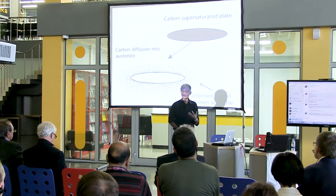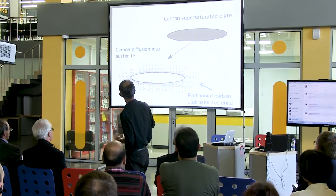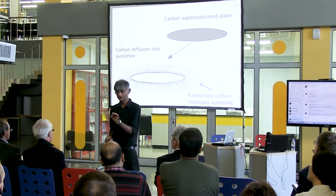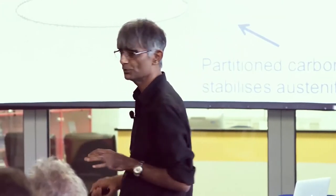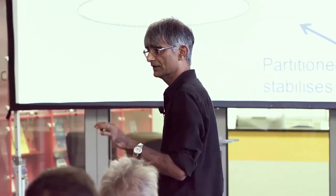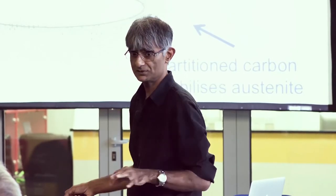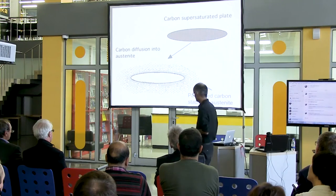If I summarize about 40 years of work, this is the mechanism of the bainite transformation. You form a plate exactly like martensite without any diffusion. But carbon is a small atom, and it sits inside the holes in the crystal structure. Shortly after transformation, it can escape into the remaining austenite. Carbon stabilizes austenite, so if you allow this carbon to partition, you will end up with either austenite or carbides. We can control the precipitation of carbides so that we end up with just a mixture of ferrite and austenite.